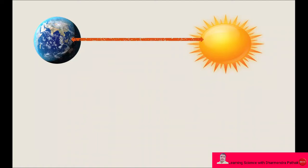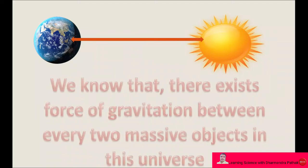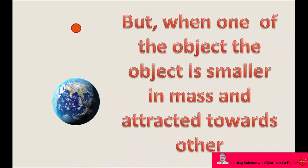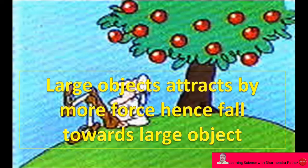Here two objects are the earth and the sun, separated by a certain distance, and we know that there exists a force of gravitation between every two objects in this universe. But when one of the objects is smaller in mass, it gets attracted towards the other or larger mass. Large objects attract with more force, hence a small object falls towards large objects.